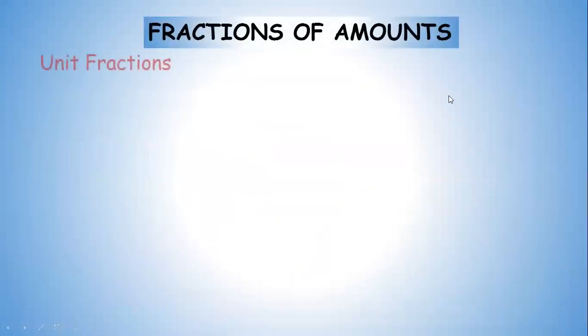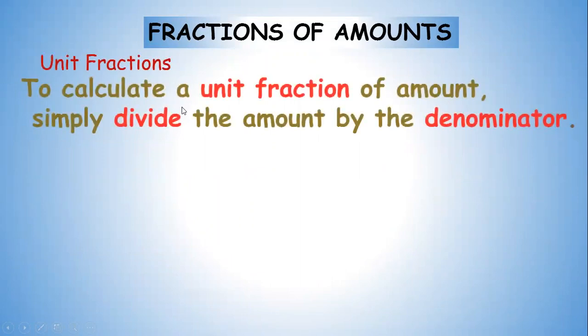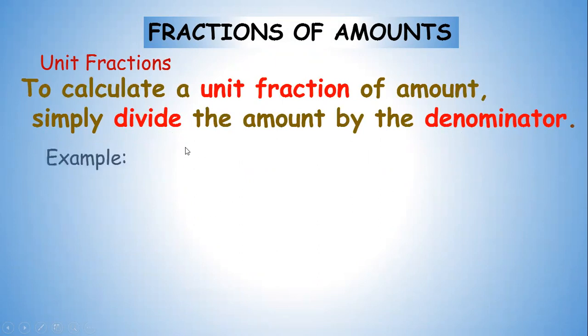Now what is fractions of amounts? So to calculate a unit fraction of amount, simply divide the amount by the denominator. Now what does that mean? Looks like complicated, but it's not. How? Well, if we have a unit fraction, which is half. So what is half of ten? Well, you all know that. Without even actually calculating what is happening here, you would say five. Well, yes, that is five. But how did you get it? Let me explain it to you.